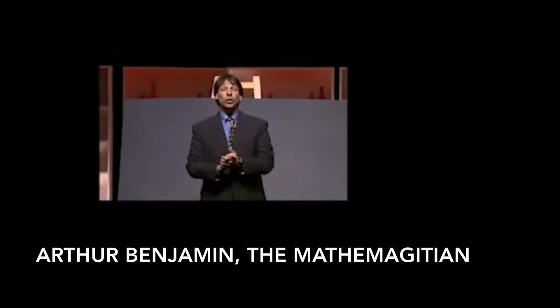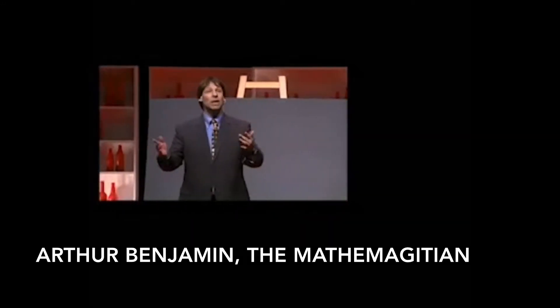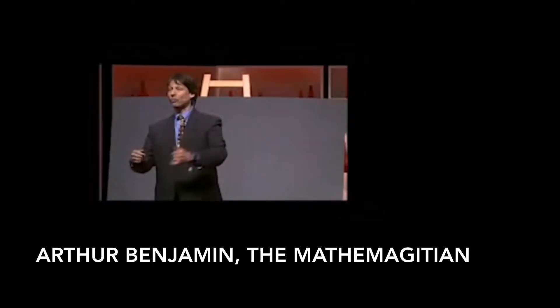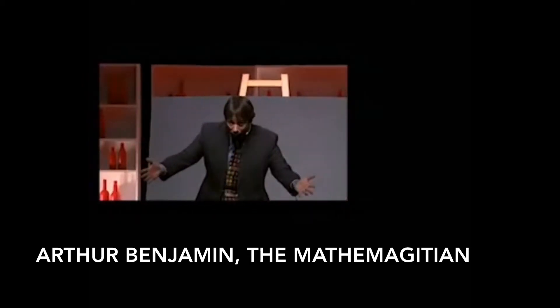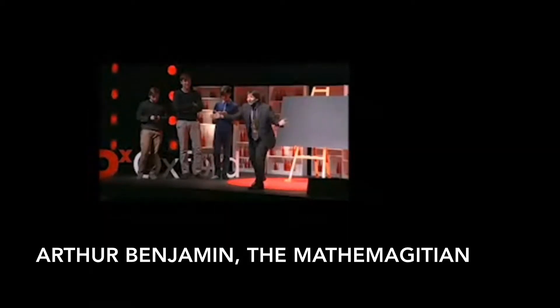There's something called the square of a number, which most of you know is taking a number and multiplying it by itself. For instance, five squared would be 25. Six squared would be 36. Seventy-three squared would be something else.